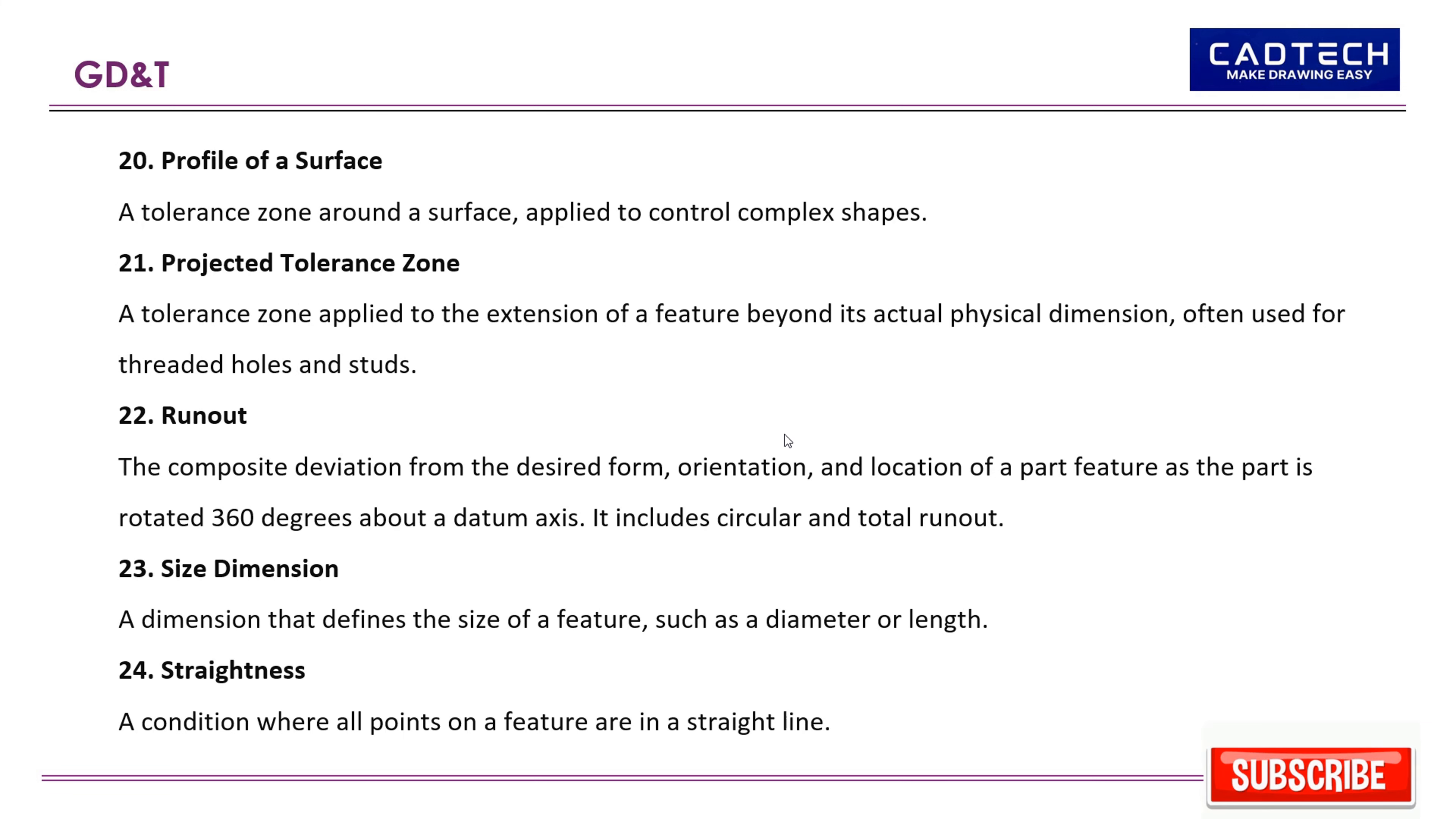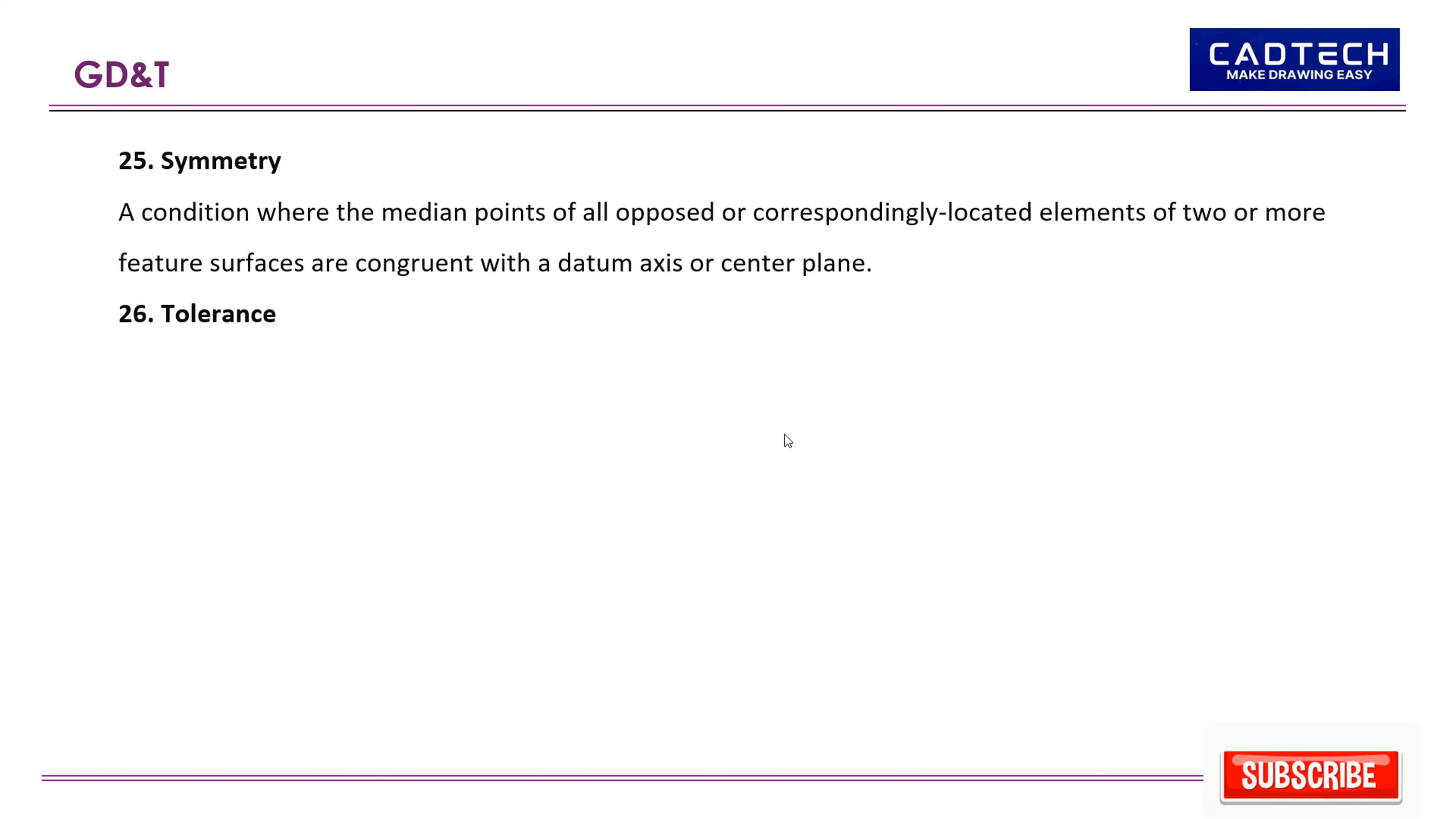25. Symmetry: A condition where the median points of all opposed or correspondingly located elements of two or more feature surfaces are congruent with a datum axis or center plane. 26. Tolerance: The total permissible variation in size or location dimensions of a feature.